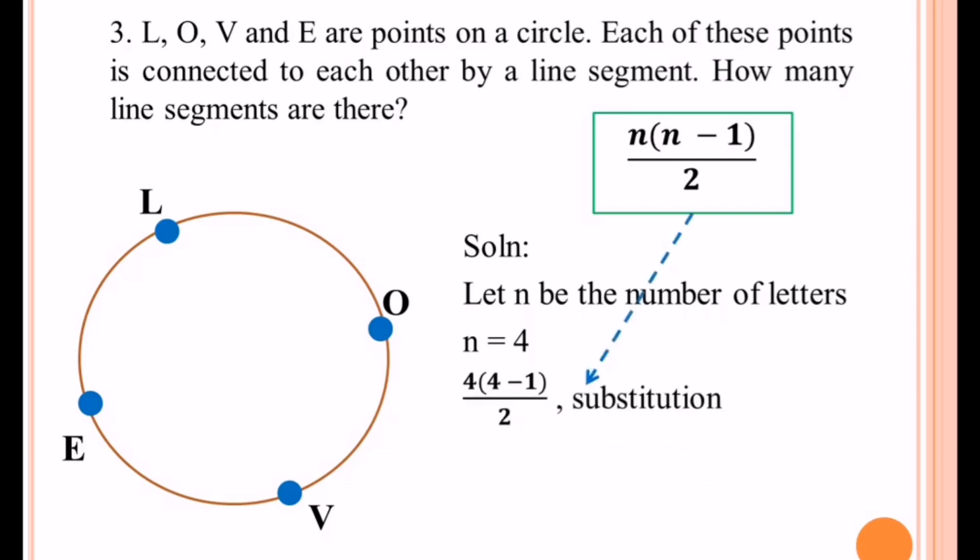So we have 4 times (4 minus 1) over 2. Then 4 minus 1 is 3, so we have 4 times 3 over 2. Then multiply it, we have 12 over 2. Then the quotient is 6.